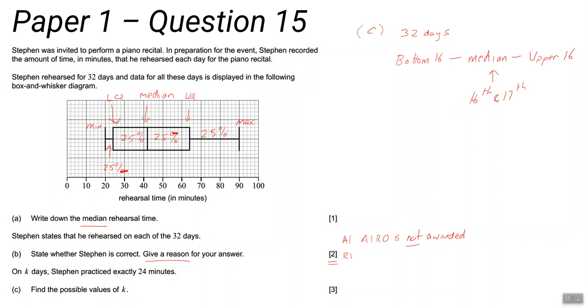This median is between the 16th and the 17th data point. So there are 16 values below the median. So we have 16 values below the median. And you've worked out what the median is in Part A.